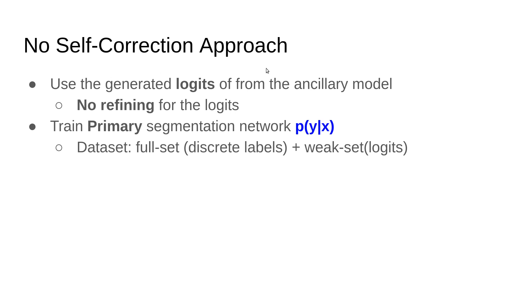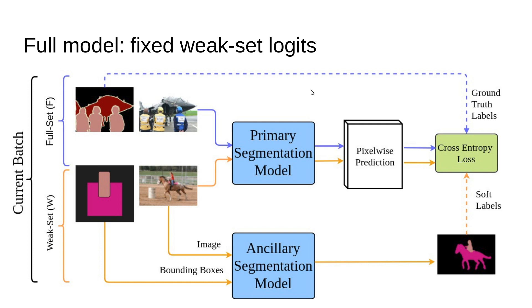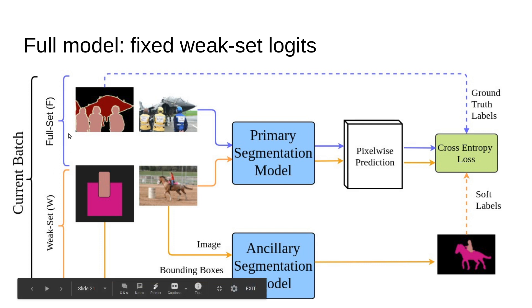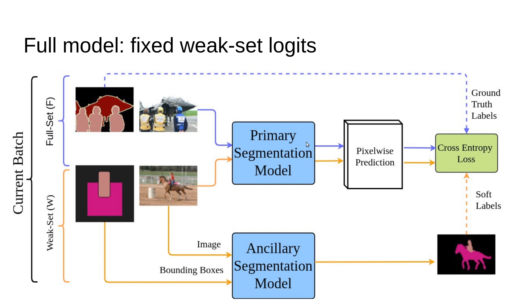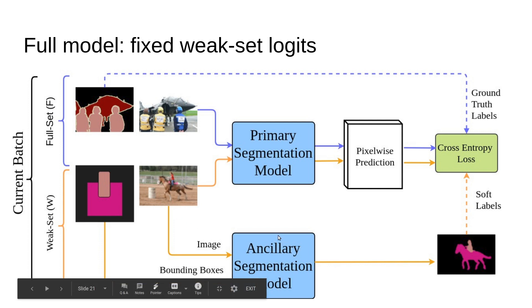Once we train this ancillary model using the fully set, we can use it to extract logits for the weak set. We call it no-self-correction approach because we're going to train a standard segmentation network p(y|x) that has data as follows: a fully labeled set coming from the full set and a weak set with logits extracted from the ancillary model. If the image is coming from a full set, it goes to the standard segmentation network cross-entropy normally. Otherwise, if it's from the weak set, we provide to the fixed ancillary model the image and bounding box, extract the potential logits for it—kind of soft labels—and use it as cross-entropy.